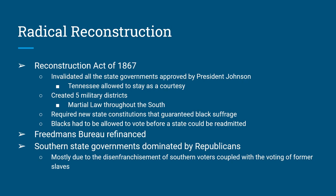The Radical Reconstructionists also refinanced the Freedmen's Bureau, giving them more money to continue their work. For a brief time, Republicans dominated state governments in the South, primarily because so many white voters could not vote. Once we get to 1873, Democrats take back over in the South and maintain control of the South until the early 2000s to late 1990s.